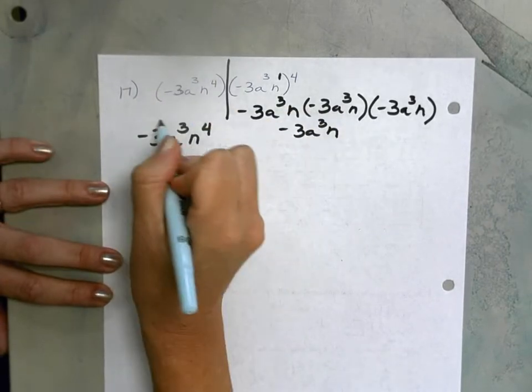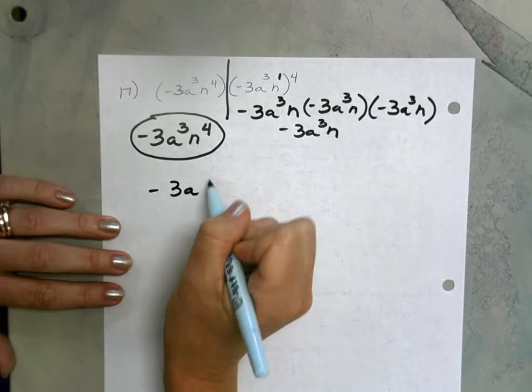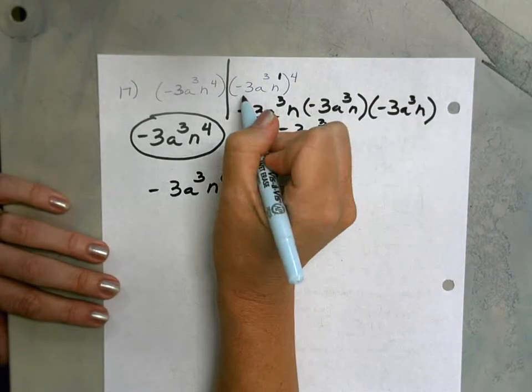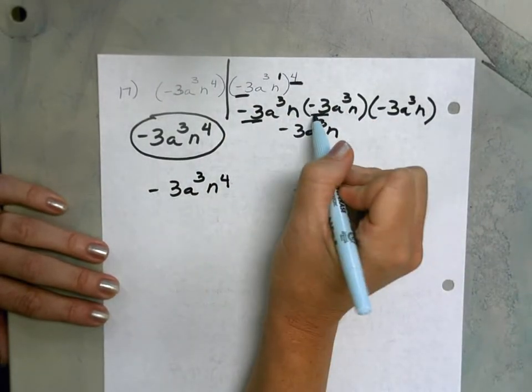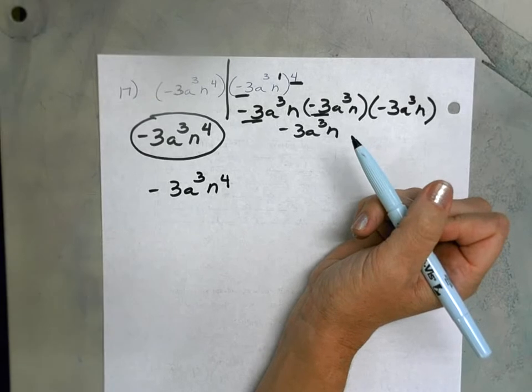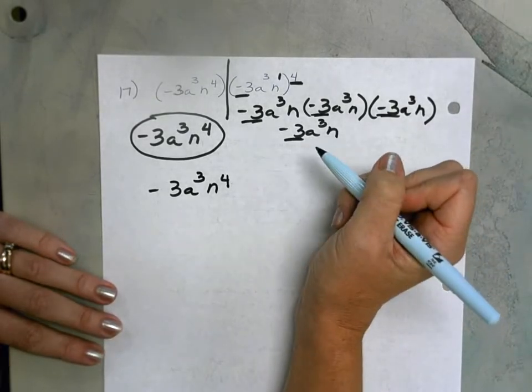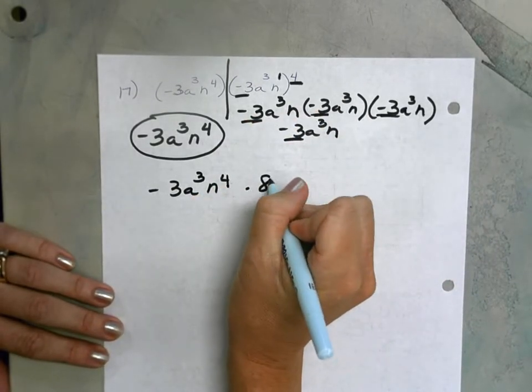I'm going to take my original monomial and bring it down, negative 3a to the 3rd and n to the 4th. And then let's look at what I have. I have negative 3 to the 4th power, or negative 3 times negative 3, which is 9. Negative 3 times negative 3, which is 9. 9 times 9 is 81.